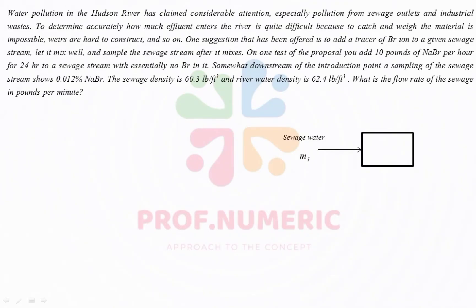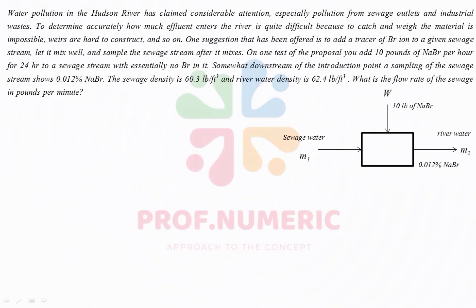Here we have a system of the mixer. The stream coming into the system is the sewage water, which we call M1. Here we have W, which is the amount of tracer we are adding into the system — given as 10 pounds of sodium bromate. All these streams are mixing and finally we end up with the outlet stream M2. We are also given the composition of that stream: 0.012 percent sodium bromate, and the rest is water.